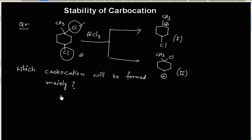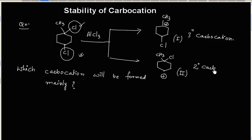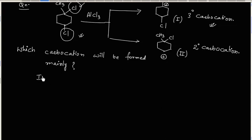This can be decided on the basis of the stability of the carbocation. This is a 3° carbocation and this one is a 2° carbocation. So this carbocation is more stable, and in this case, one will be formed as the major carbocation.